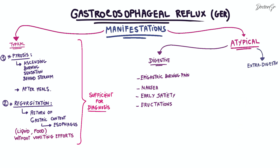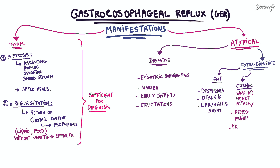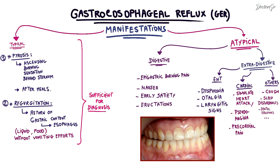Extradigestive manifestations include ENT symptoms such as dysphonia, otalgia, and some pseudo-cardiac symptoms. GER can simulate a heart attack, what we call pseudoangina, as well as precordial pain. In some rare cases, patients may present nocturnal chronic cough or sleep disturbance, as well as dental erosions due to gastric acidity reaching the mouth.